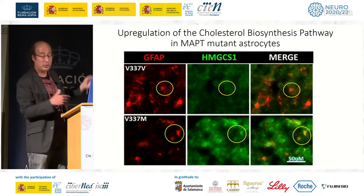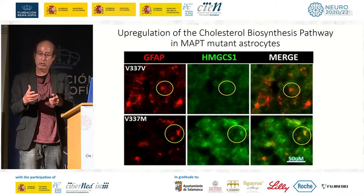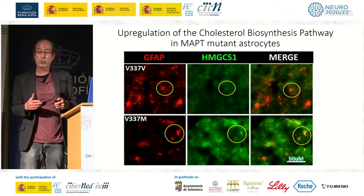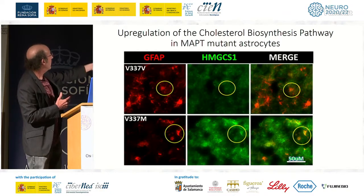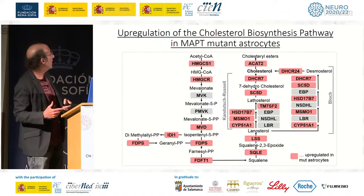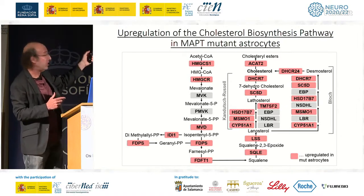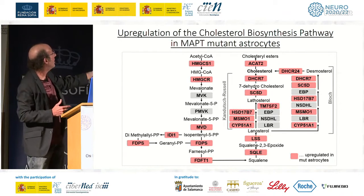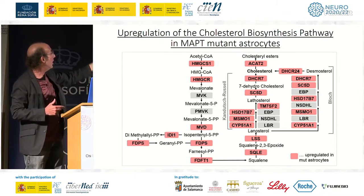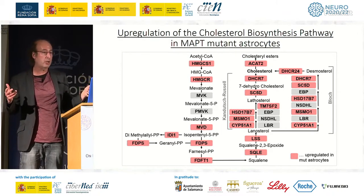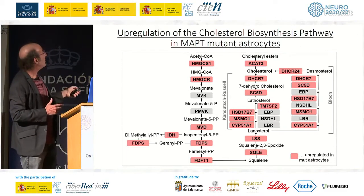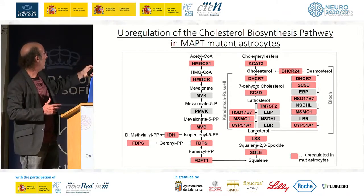We can further validate this finding by looking at one expressed gene in those astrocytes: HMG, which is a critical enzyme in the cholesterol pathway. When you take statins to lower your cholesterol, they are targeting HMG. We can see that the staining is increased in the mutant relative to the control. Looking at the entire cholesterol pathway — from acetyl-CoA at the very beginning all the way down to cholesterol — this goes through all the steps for which Brown and Goldstein received a Nobel Prize.